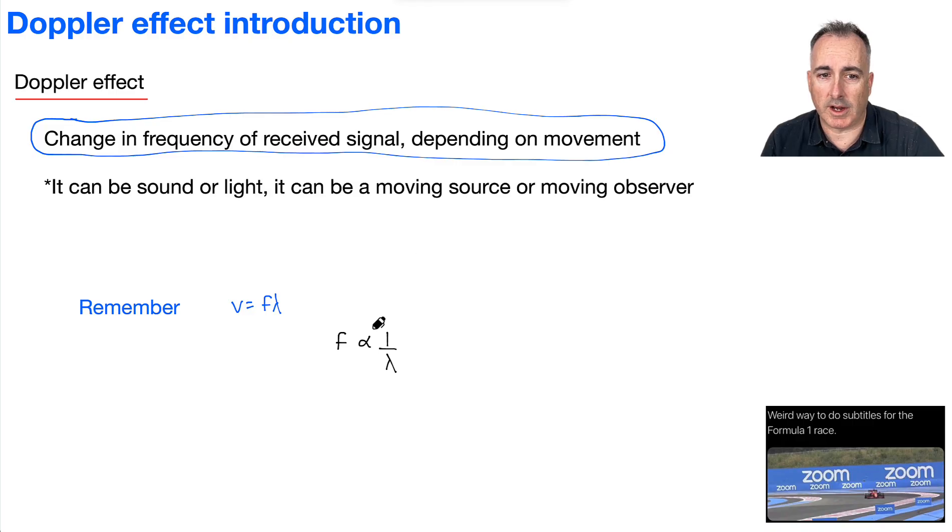In other words, if one gets bigger, the other gets smaller. This is the key thing to understand what's happening with frequency or wavelength. If the wavelength increases, then the frequency decreases. They are opposites.